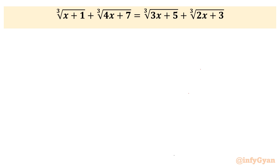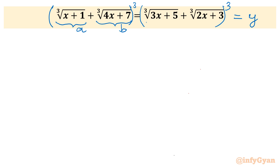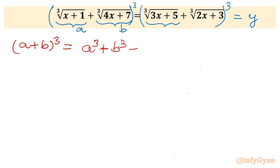Let me begin this problem by writing this equality equal to y — for both sides we will write y. Now I will take cube of both sides. Consider a plus b: on the left side, the first cube root is our a and the second is our b, and similarly on the right. So we have to use the identity: (a+b)³ = a³ + b³ + 3ab(a+b).